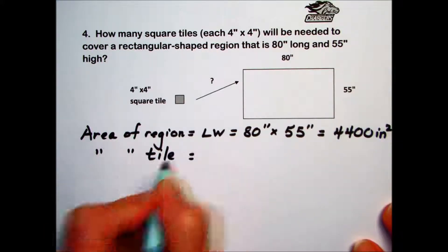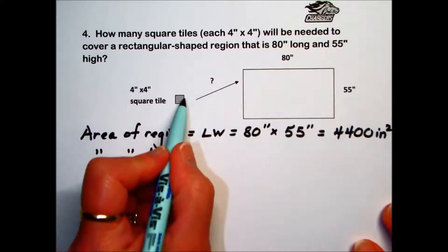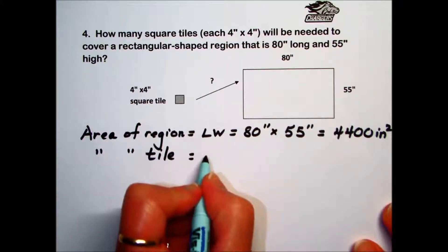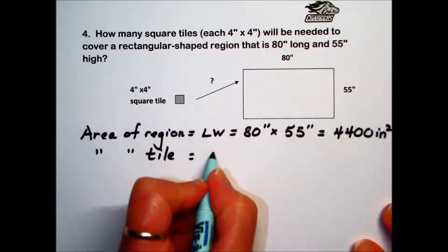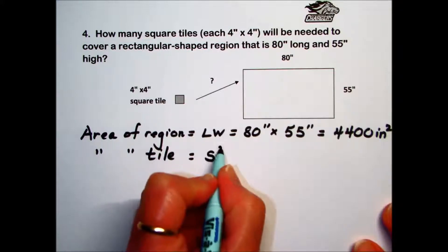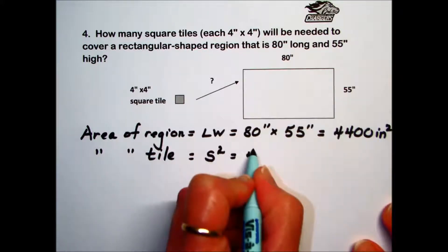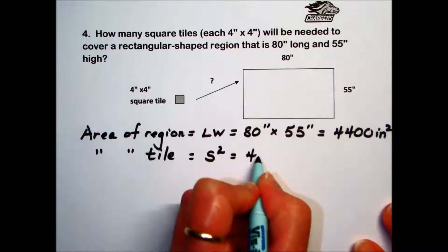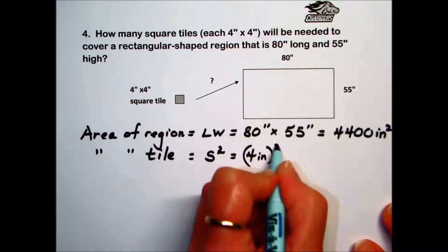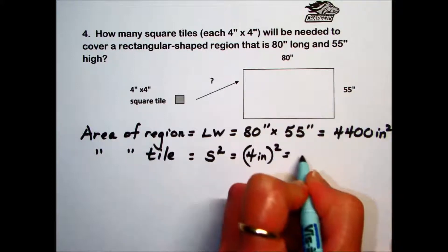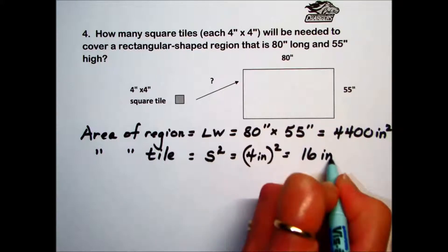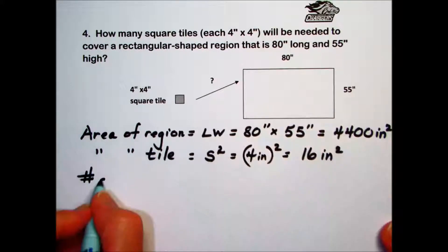Next, we will want to find the area of each tile. It's a square. To find the area of a square, we take side squared. So we're going to take 4 inches and square that. 4 times 4 gives us 16. Inches times inches is going to give us square inches.